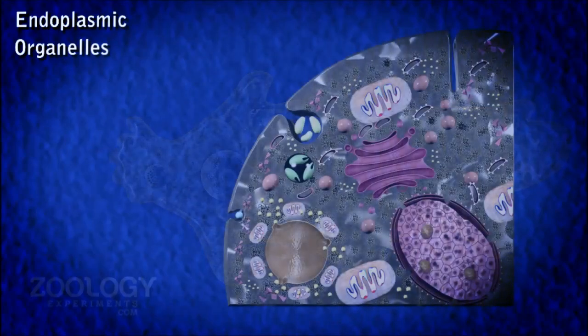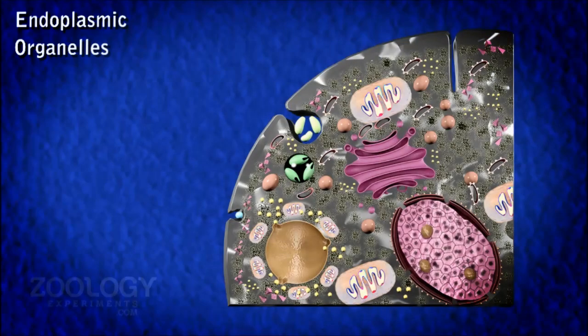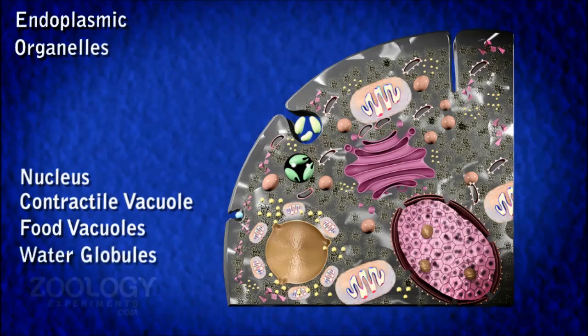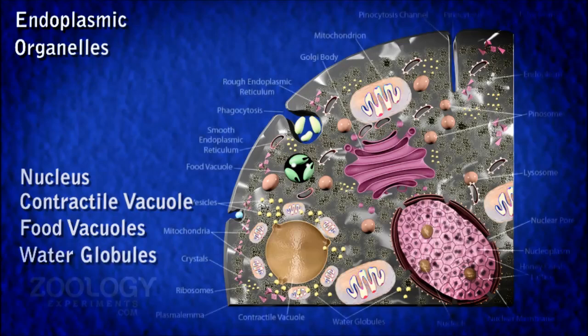Endoplasmic organelles. Under light microscope, a number of organelles are visible. They are found within the endoplasm. These organelles include the nucleus, contractile vacuole, food vacuoles, water globules and other organelles.